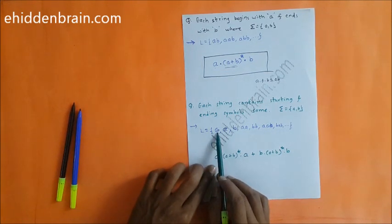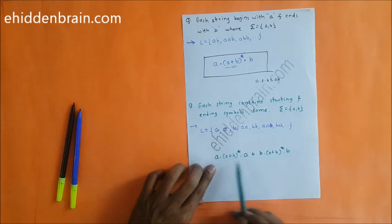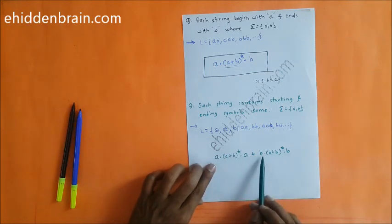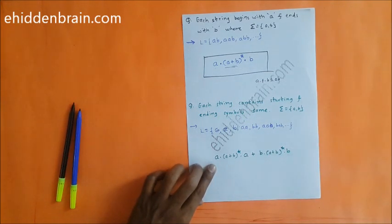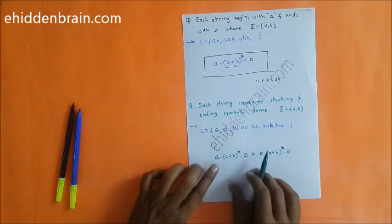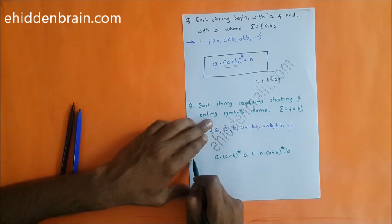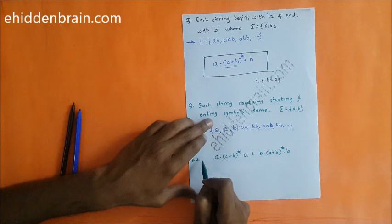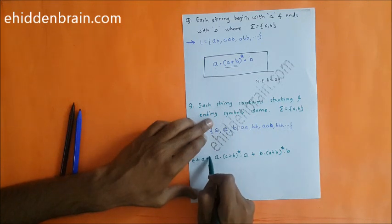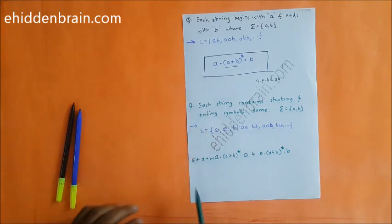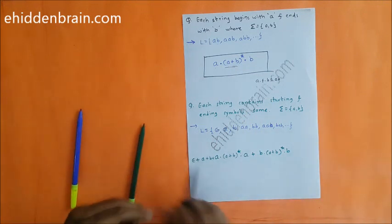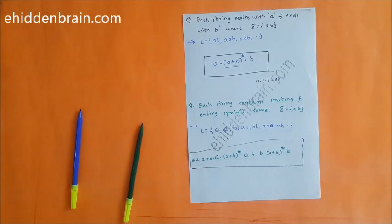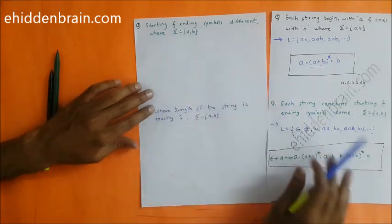However, this is not a sufficient regular expression because epsilon is not generated — minimum length string possible is 2 (like 'aa' or 'bb'). So strings of length 2 to infinity are generated, but epsilon, single 'a', and single 'b' are missing. That's why I will generate epsilon, 'a', and 'b' explicitly. So the final valid regular expression is: ε + a + b + a(a+b)*a + b(a+b)*b.